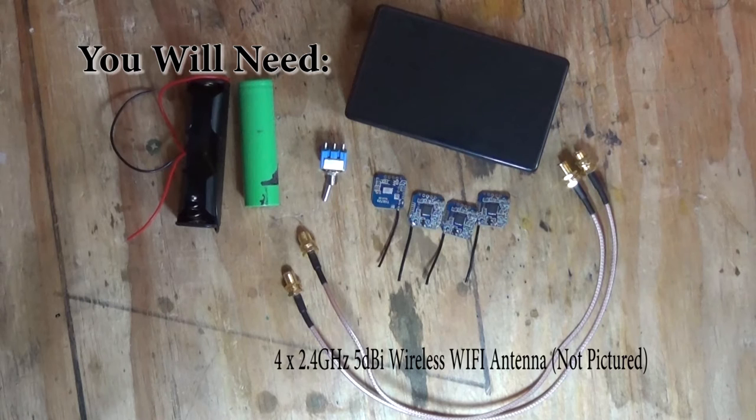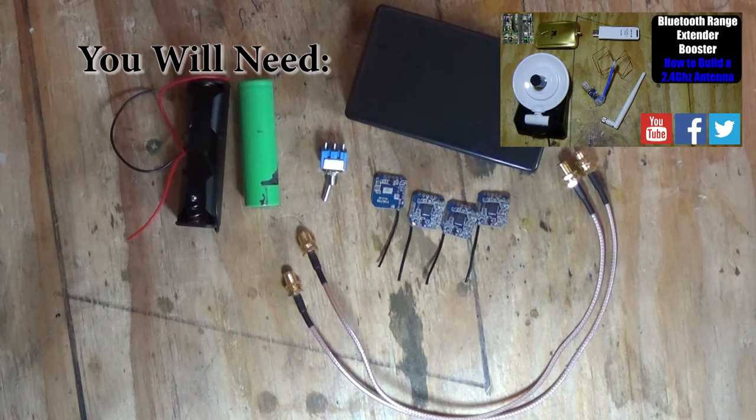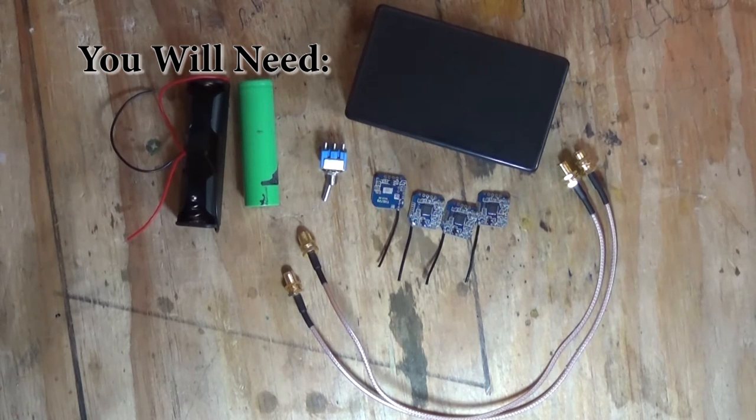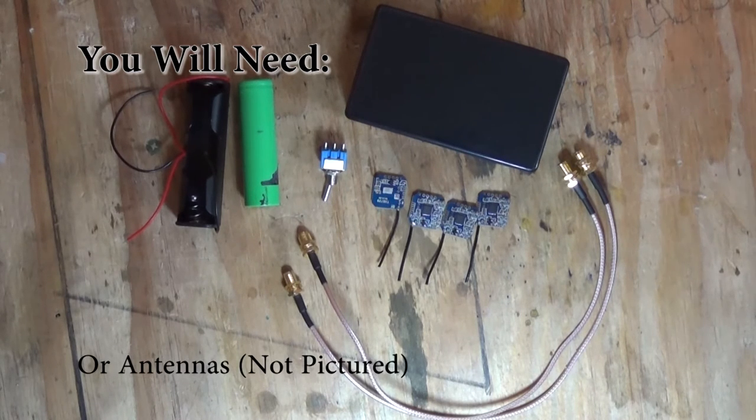If you want to make your own antennas, that's fine. I've made a video on how to do that which you can click in the top right hand corner now to see how. If that is the case, then you do not need the SMA jacks and you can connect them directly to the transmitting modules. I will show you how to do that in a minute.